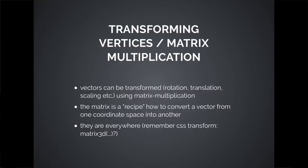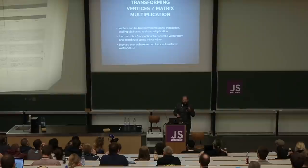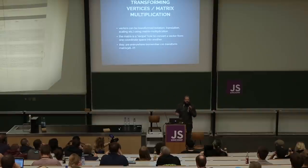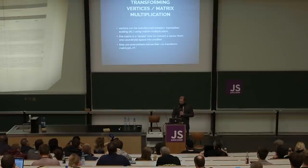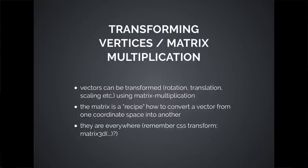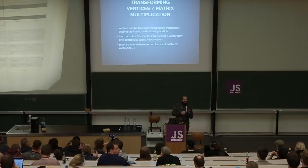What we can do with vertices is transform them — you probably know this from CSS transforms, it's the same thing. We can rotate them, translate them — so move them around — and scale them. All of this is done with something called matrix multiplication. A math library takes care of this for you. You have a matrix, you throw a vector at it, and out comes another vector. That matrix is just a recipe for how to make one vector out of another, containing all these rotations, translations, and so on.